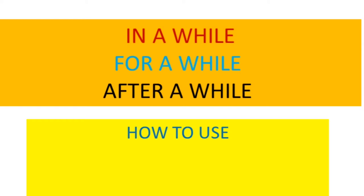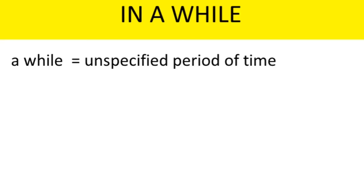Hi guys, do you know how to use 'in a while,' 'for a while,' and 'after a while'? Let us learn how to use these three. First, 'in a while.' A while is a noun, so the meaning of 'a while' is an unspecified period of time. The time period may be ten minutes to years, so it depends upon the context.